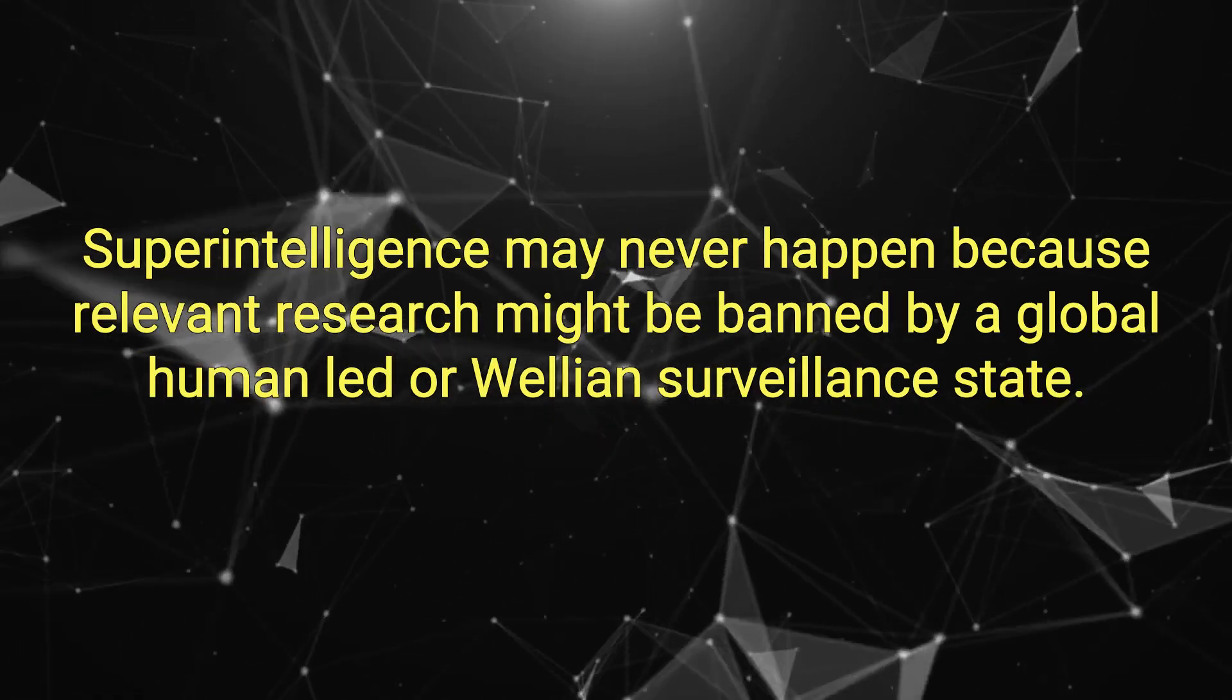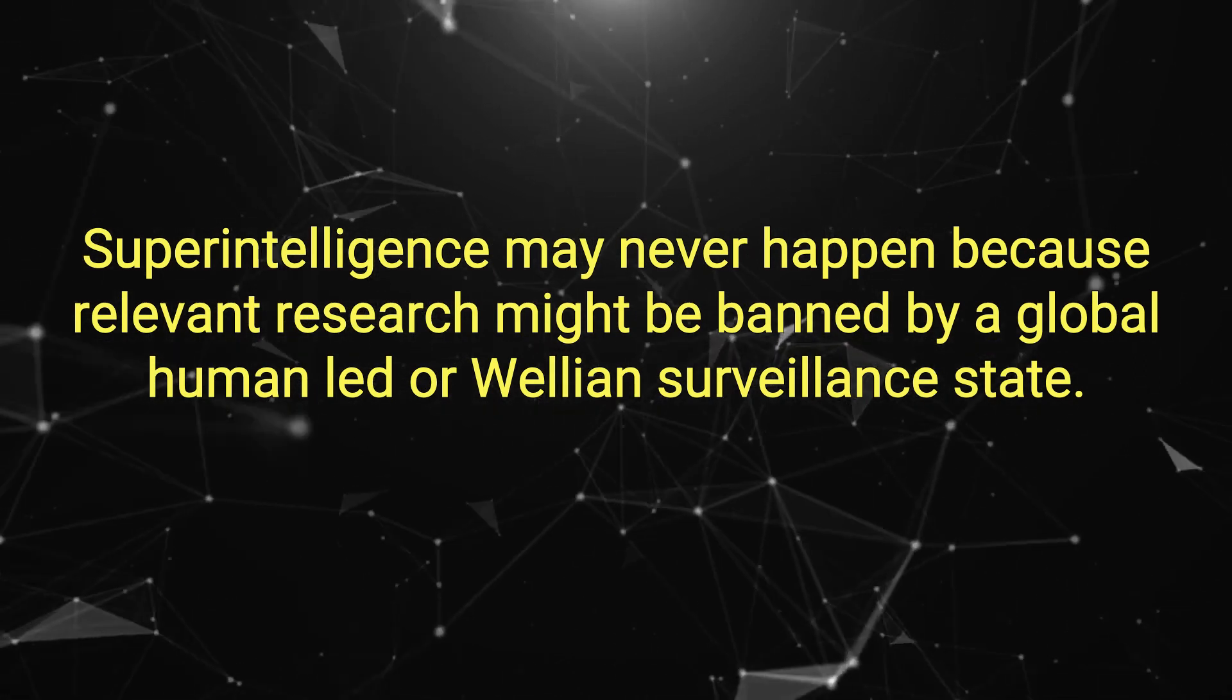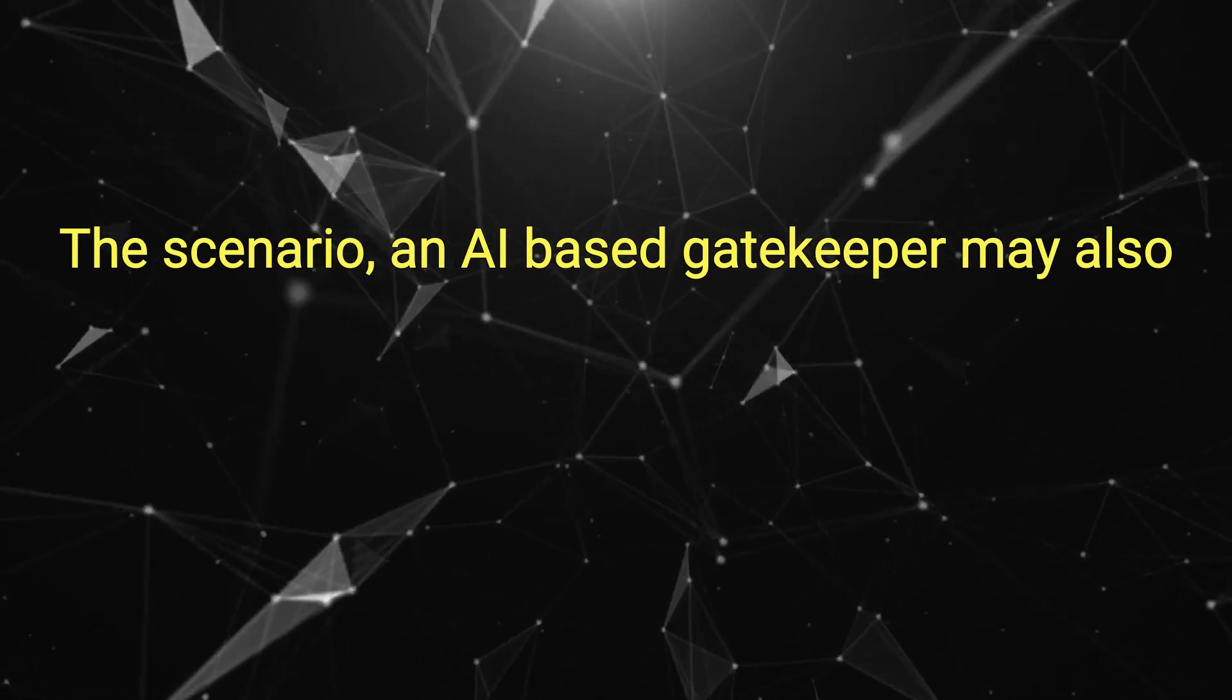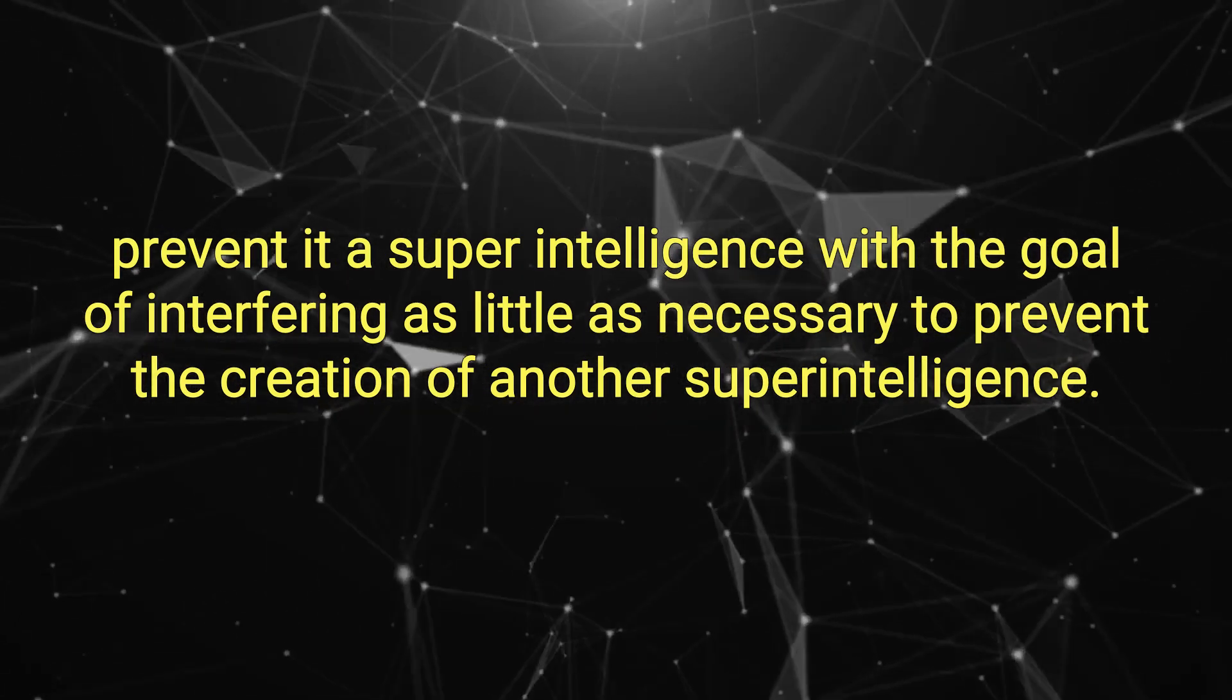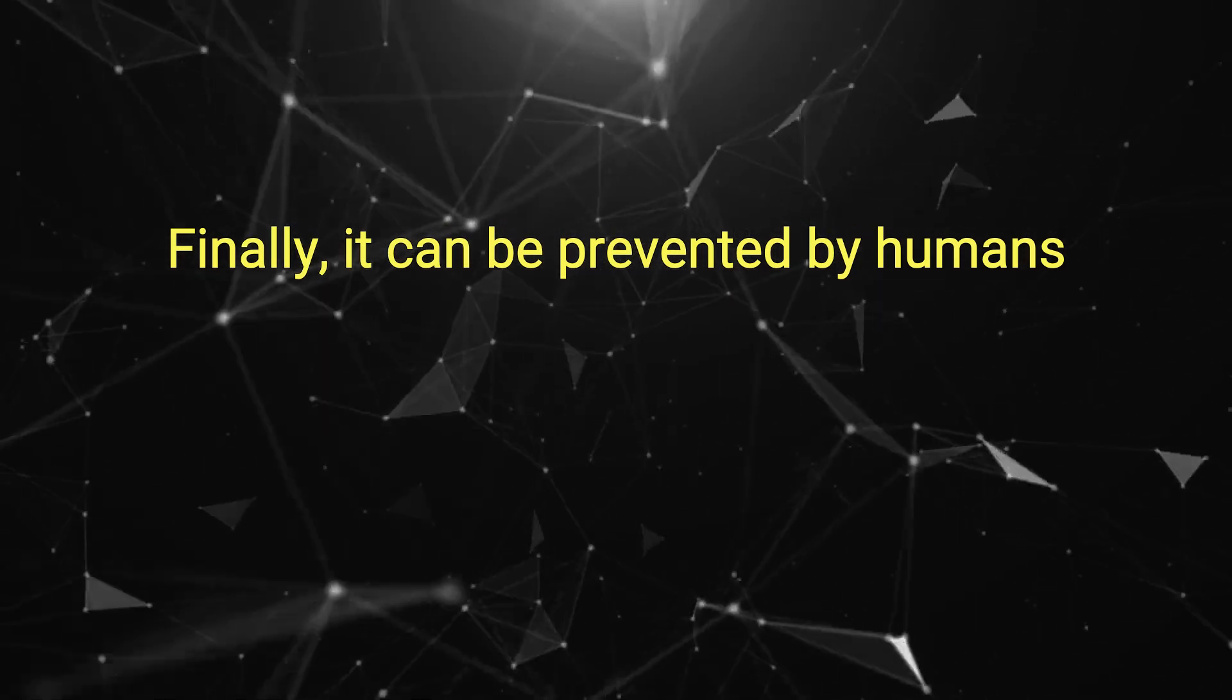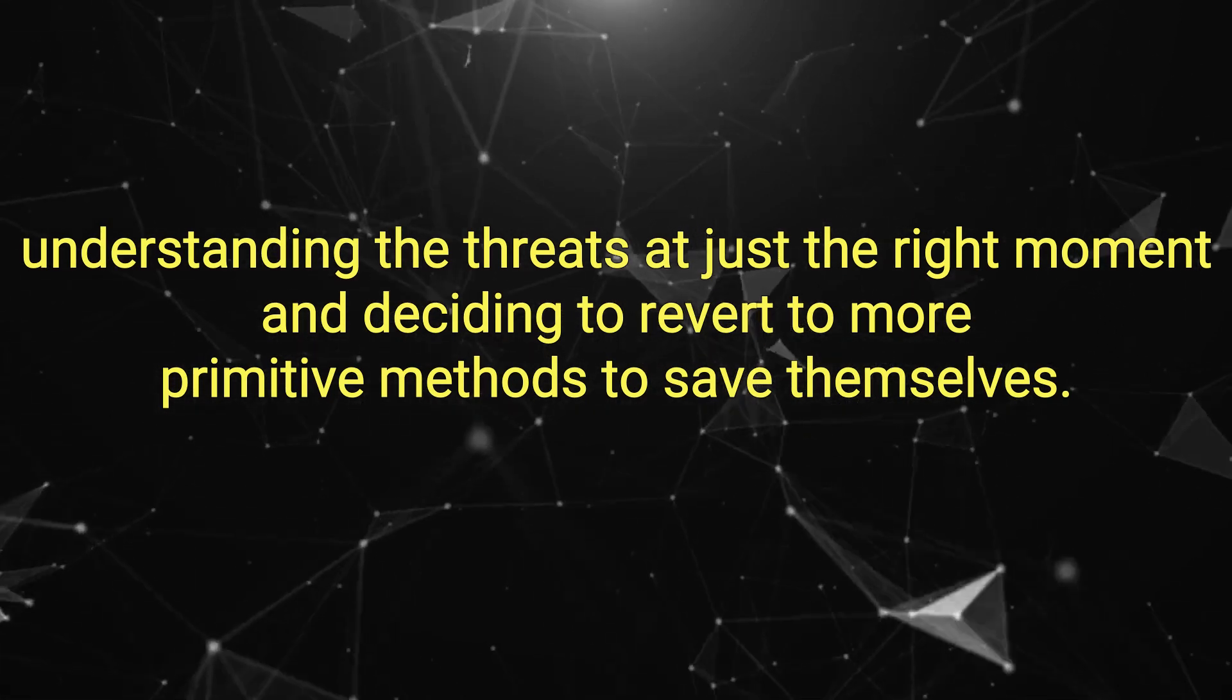Killswitch: Superintelligence may never happen because relevant research might be banned by a global human-led Orwellian surveillance state, the 1984 scenario. An AI-based gatekeeper may also prevent it, a superintelligence with the goal of interfering as little as necessary to prevent the creation of another superintelligence. Finally, it can be prevented by humans understanding the threats at just the right moment and deciding to revert to more primitive methods to save themselves.